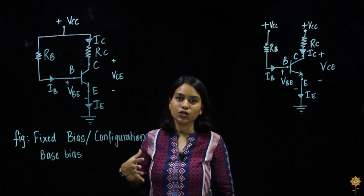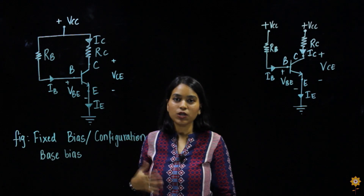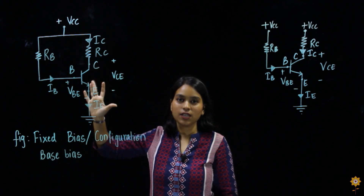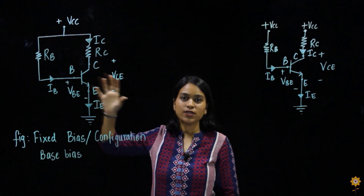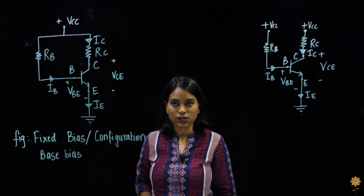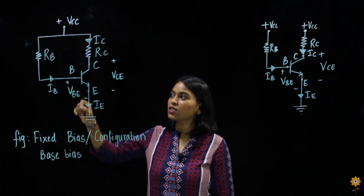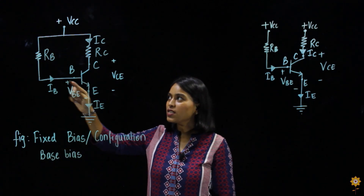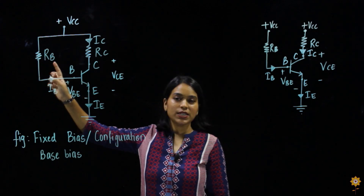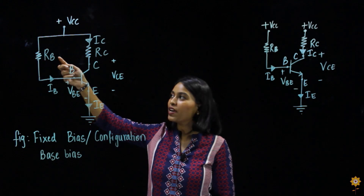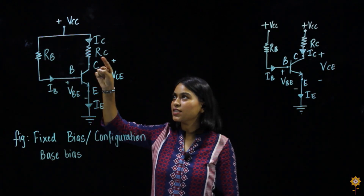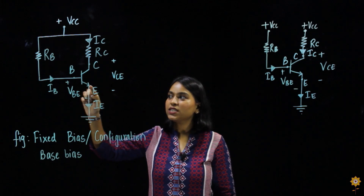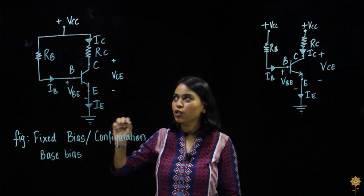When studying, you should be able to distinguish between all three techniques. The resistor RC connected across the collector terminal is present in all three configurations. Since this is base bias, there is a resistor RB present at the base terminal. RB is named after the base terminal B, and RC after the collector terminal C. There is no resistor present at the emitter terminal.